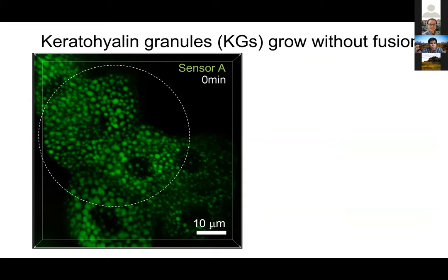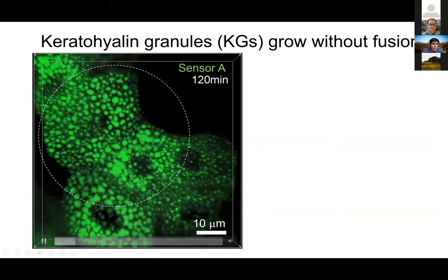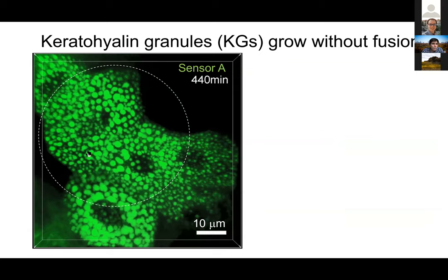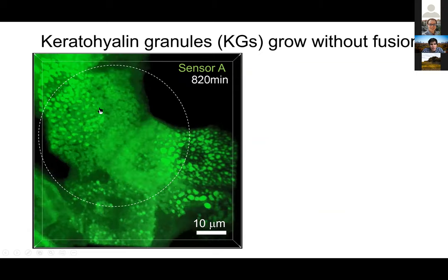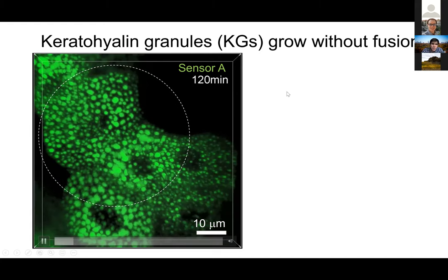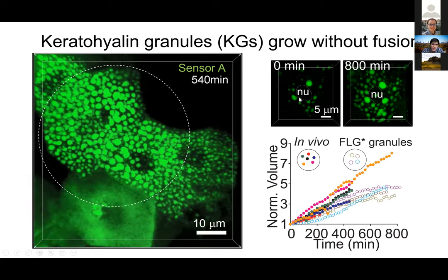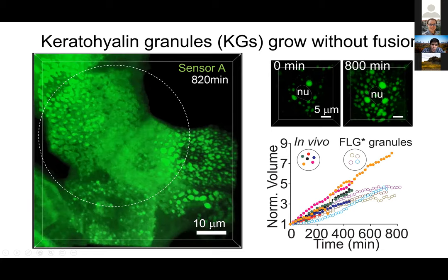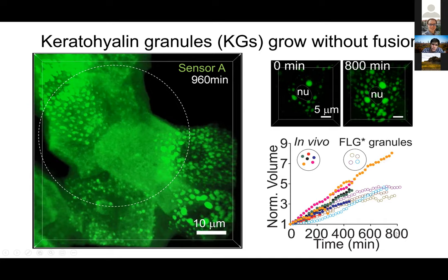Since this is live imaging data, we can do experiments over time. We first asked whether these granules were potentially fusing. Looking at cells over the span of about half a day, we don't really see much evidence of these granules coming together and fusing. That was really surprising to us. They are growing — from zero to 800 minutes we do see a given cell acquiring new granules and existing granules getting bigger — we can quantify that the normalized volume increases significantly over 12 hours, but it's not happening through fusion. This was really puzzling, because all our previous experiments suggested these were liquids in the cell. So how come they're not fusing?